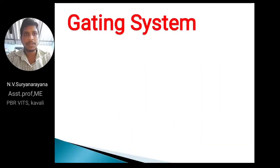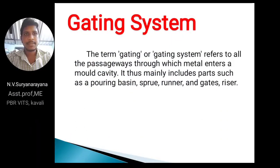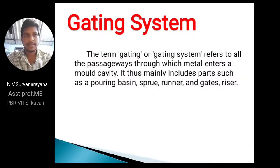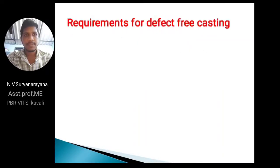First of all, we want to know about gating system and what is a gate. The term gating or gating system refers to all the passageways — that means a gate is a passageway through which metal enters into the mould cavity. It mainly includes parts such as pouring basin, sprue, runner, gates, and riser. Remember that the gate is one passageway through which molten metal enters into the mould cavity.